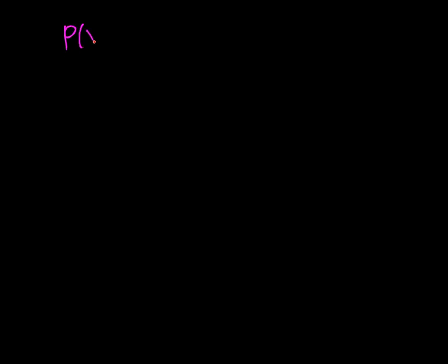In this video we'll compute the variance and standard deviation for a Bernoulli random variable. A Bernoulli random variable has two possible values, 0 and 1. The parameter p is the probability that the random variable is equal to 1, so the probability that it equals 0 is 1 minus p.